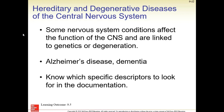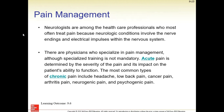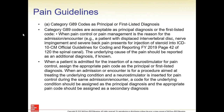Some nervous system conditions affecting the central nervous system come from genetics or degeneration. Alzheimer's disease usually starts with a diagnosis of general dementia and it progresses. Neurologists are among healthcare professionals that treat pain and neurologic conditions, and they specialize in pain management.